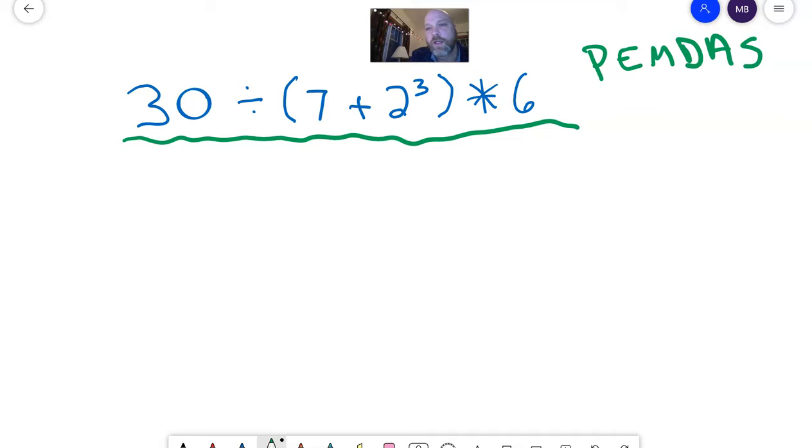So, Please Excuse My Dear Aunt Sally: parentheses, exponents, multiplication, division, addition, subtraction. I know we talked about this in class - for multiplication and division, it's whichever one comes first. And for addition and subtraction, whichever one comes first. There's a group here with multiplication and division, and a group here with addition and subtraction. So let's look at this problem - what do we got to do first?